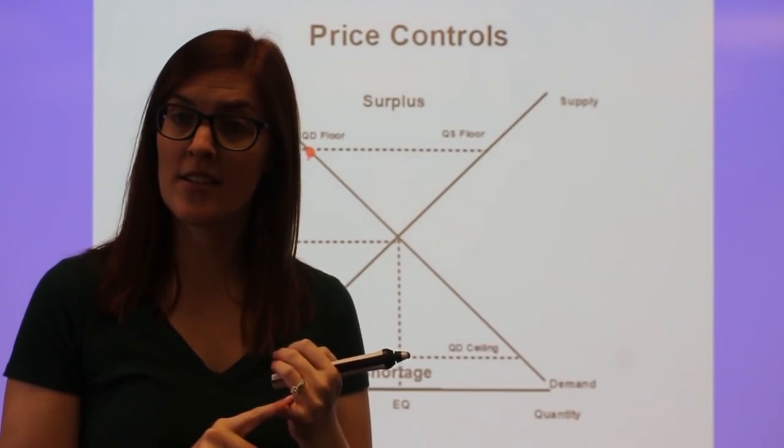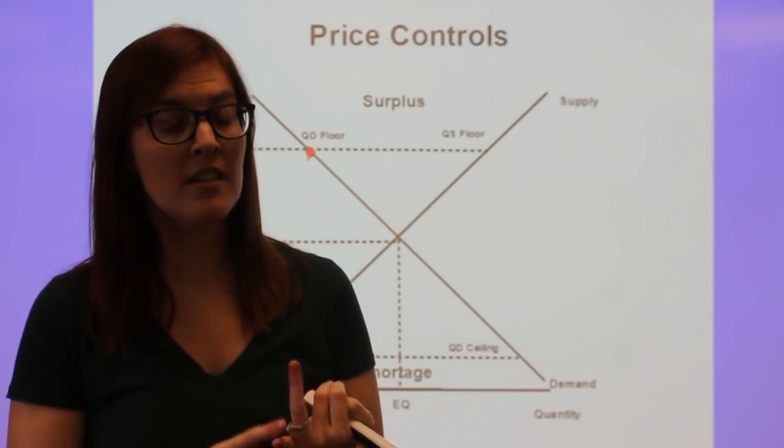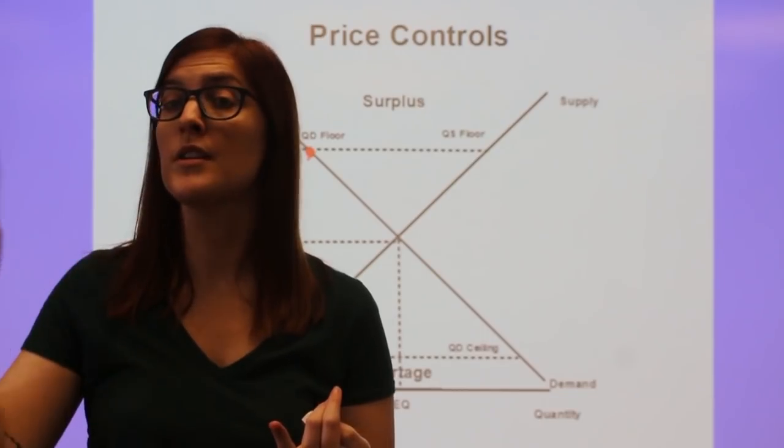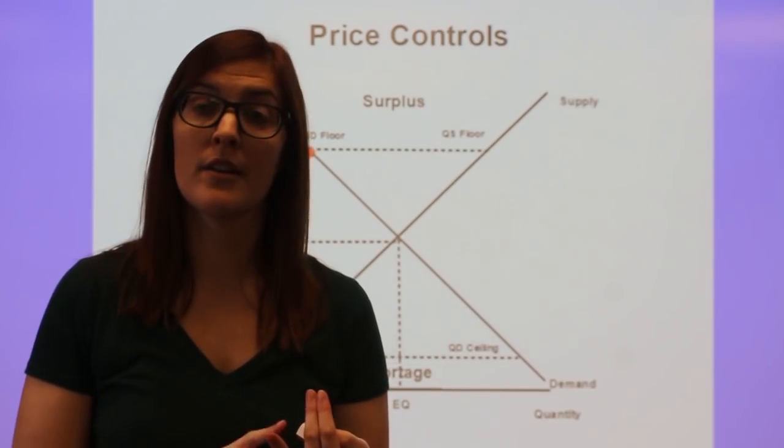The income effect, where if prices are higher, my income buys a lower quantity. Substitution effect, where if prices of a good are higher, I'm going to switch to another good, a substitute, so my quantity falls.